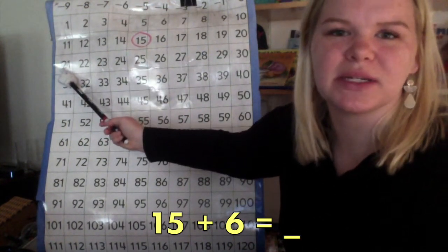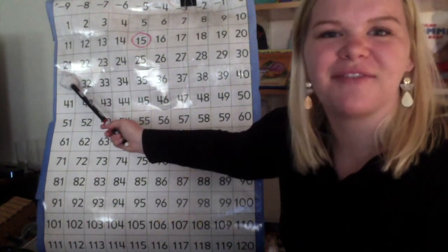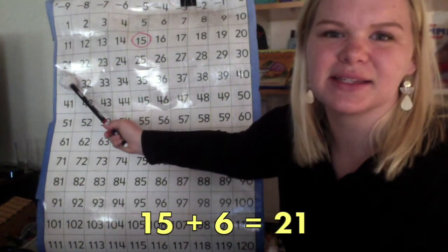We landed on the number 21. So, now we know that 15 plus 6 equals 21. Let's look at another one.